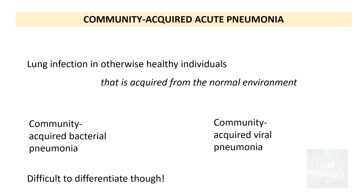Though we have categorized community-acquired pneumonia into bacterial and viral, it is really difficult to differentiate between these two because the radiologic as well as clinical features overlap. However, there is a marker called procalcitonin — this is an acute phase reactant that will be significantly elevated in community-acquired bacterial pneumonias as compared to viral infections.